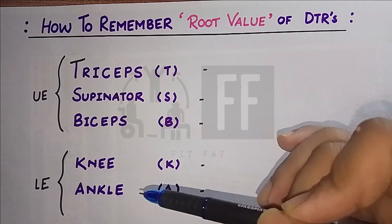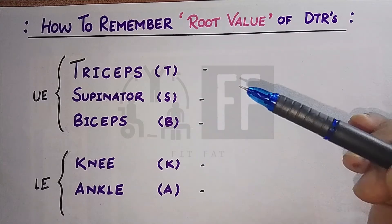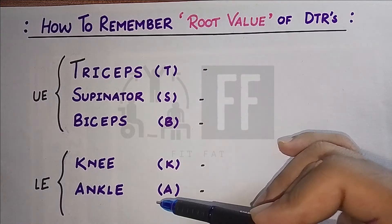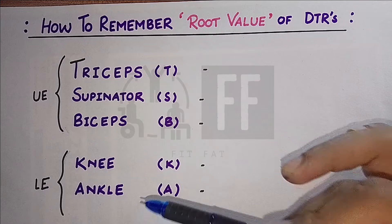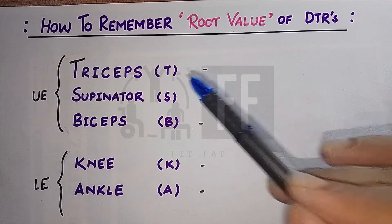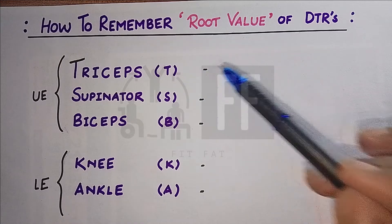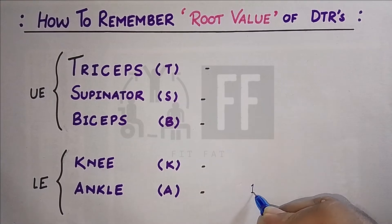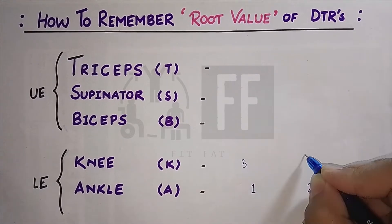In this video I will tell you how to remember the root values for a lifetime. What we generally do is try to remember the root values of DTRs from top to bottom, but here I will start from bottom to top — that is, we will start from the lower extremity and end at the upper extremity. We know that for any root value there are at least two segments.